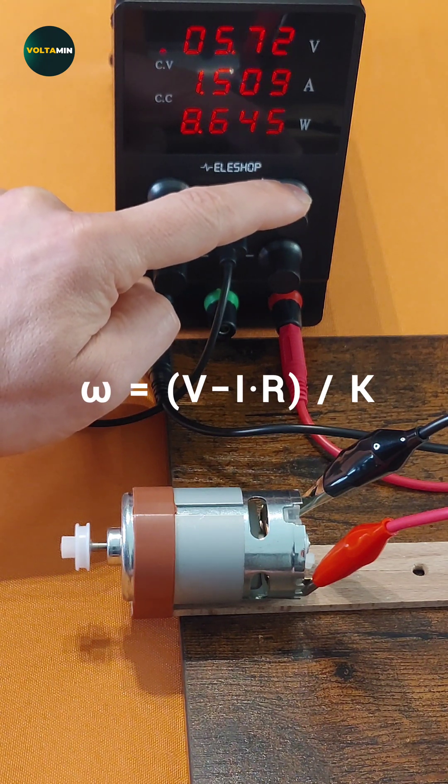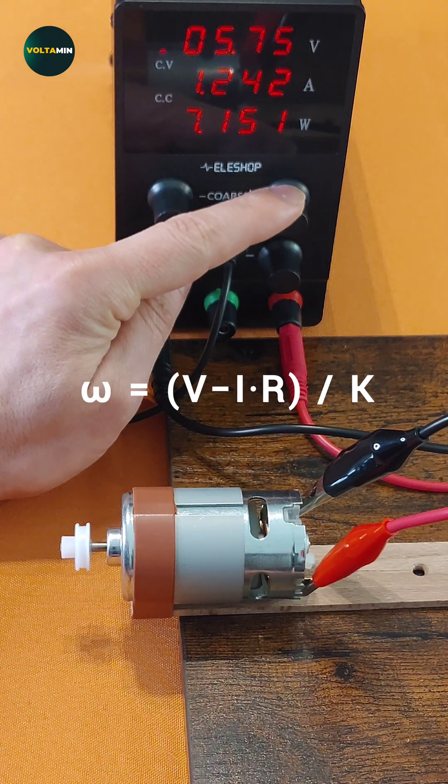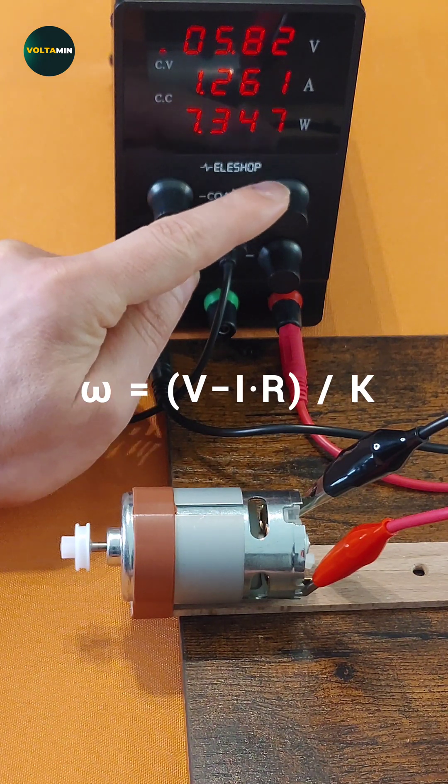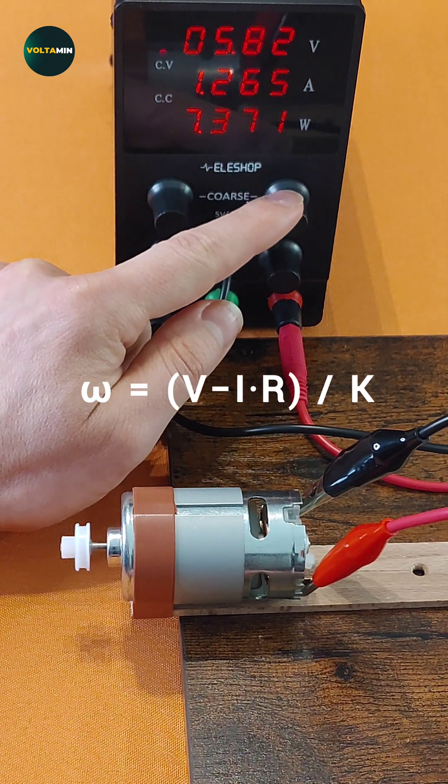This equation shows that as we increase the applied voltage V, the angular velocity omega increases proportionally, assuming other factors remain constant.